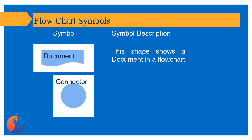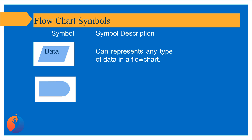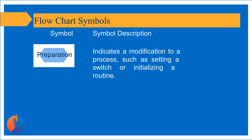Connector — indicates an inspection point. Data — can represent any type of data in a flowchart. Delay — indicates a delay in the process. Preparation — indicates a modification to a process, such as setting a switch or initializing a routine.